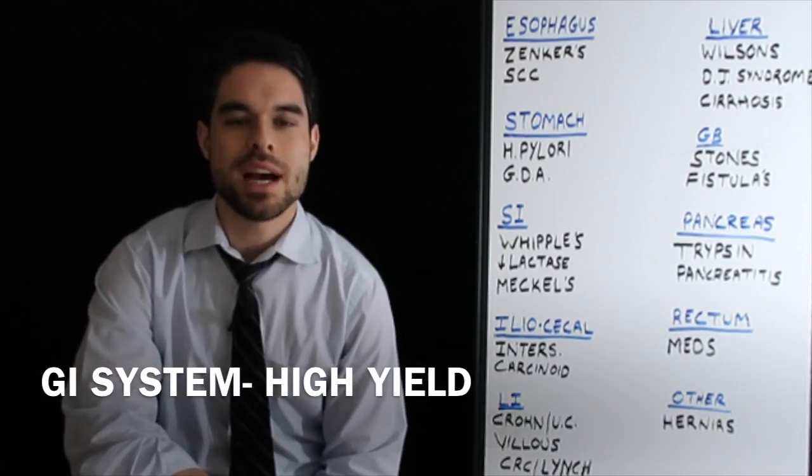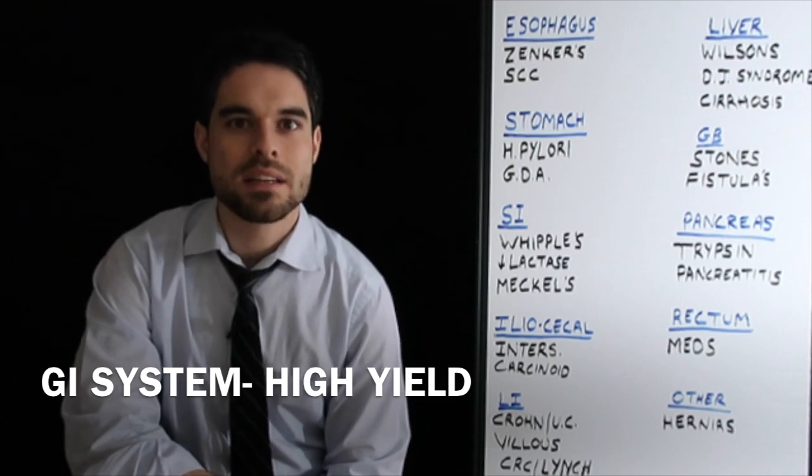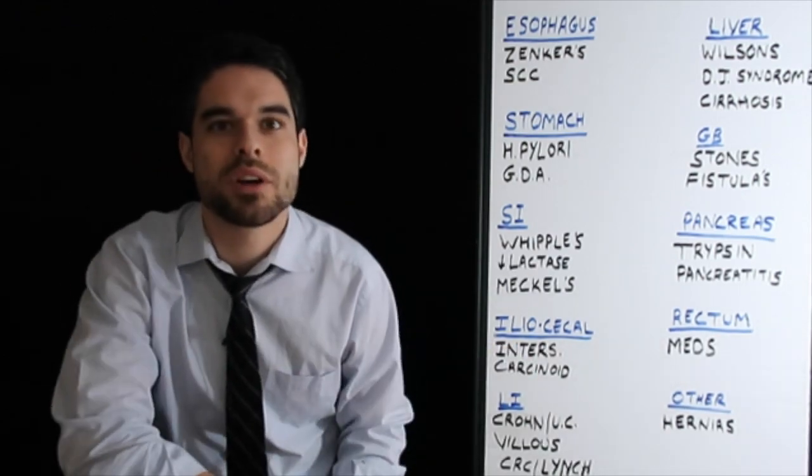This is going to be a review of the GI system, the high yield things that usually come up on step and in the question banks. We'll start from the top of the esophagus and just work our way down.